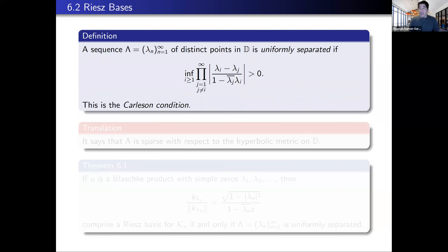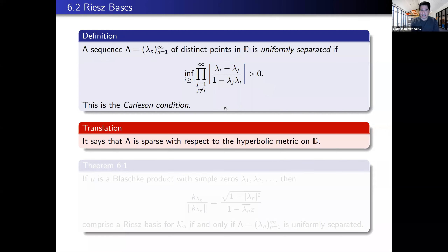We've relaxed the notion of bases to Riesz spaces — we don't care about orthonormality anymore. We need to figure out when we get nice Riesz spaces of reproducing kernels in the model spaces. We're going to need the Carleson condition: a sequence of distinct points lambda_n is uniformly separated if this infimum is greater than zero. You've got a Blaschke product evaluated at lambda_i with absolute values, and you take the infimum over all i — and you want that to be greater than zero. It's a pretty strong condition called the Carleson condition.